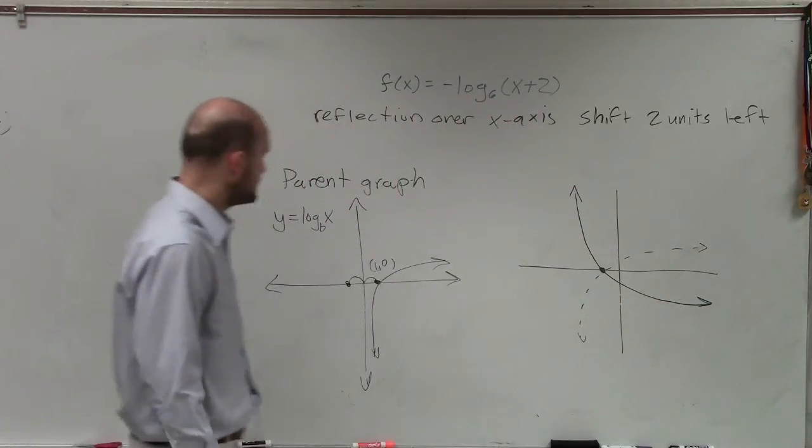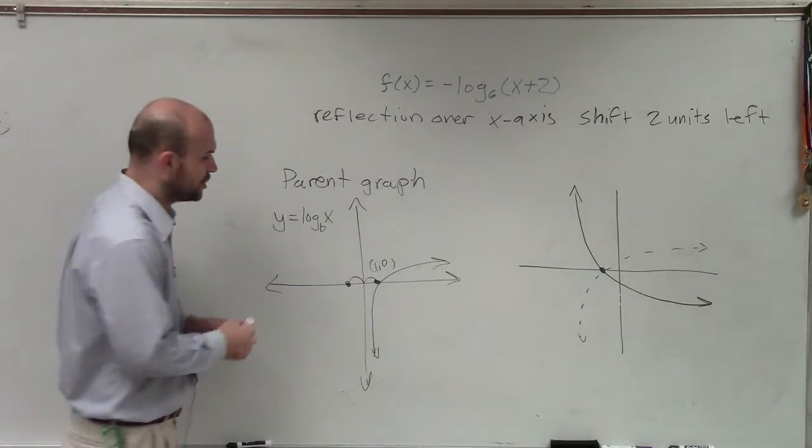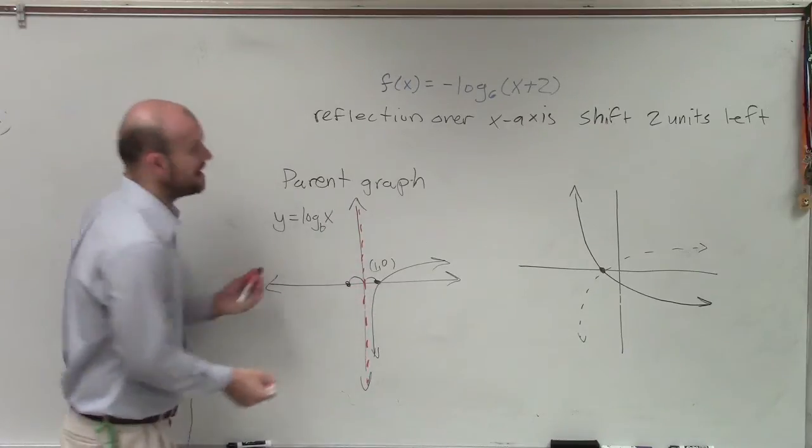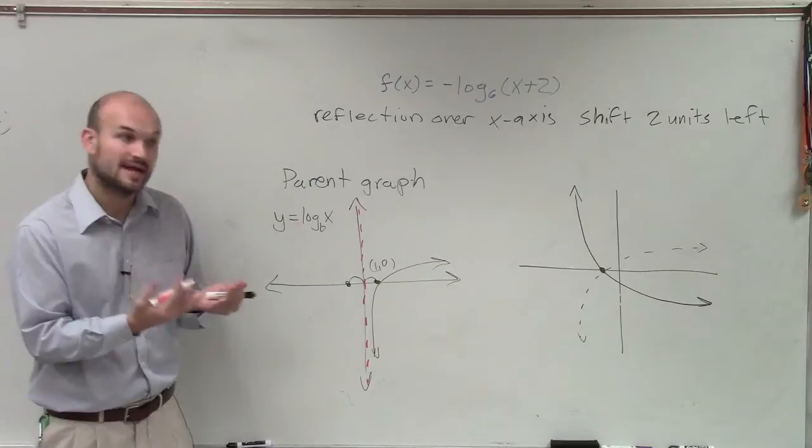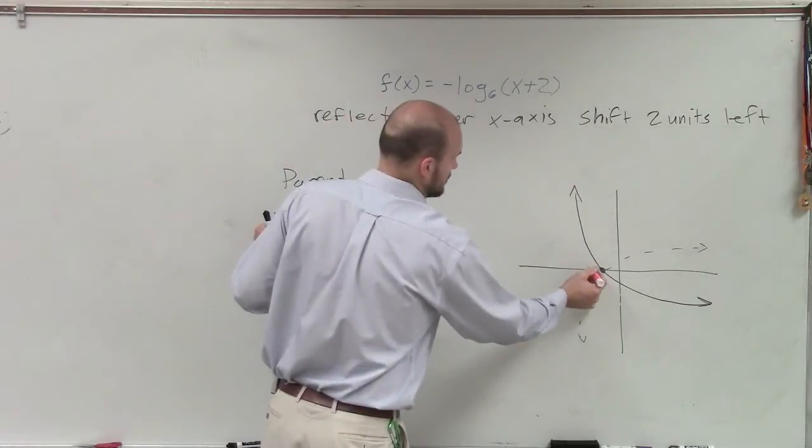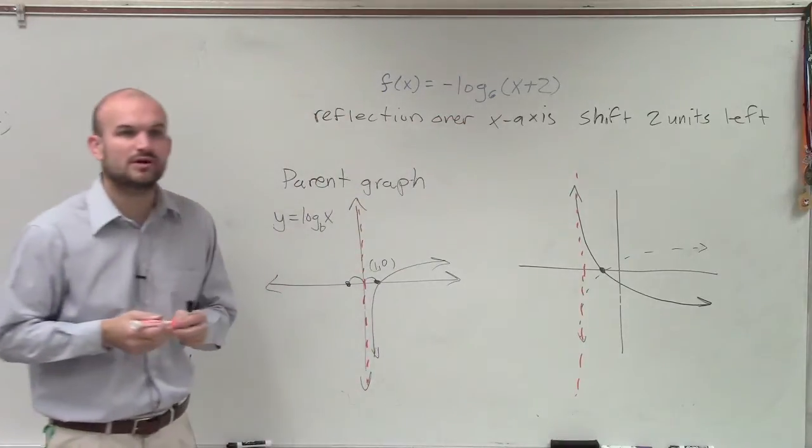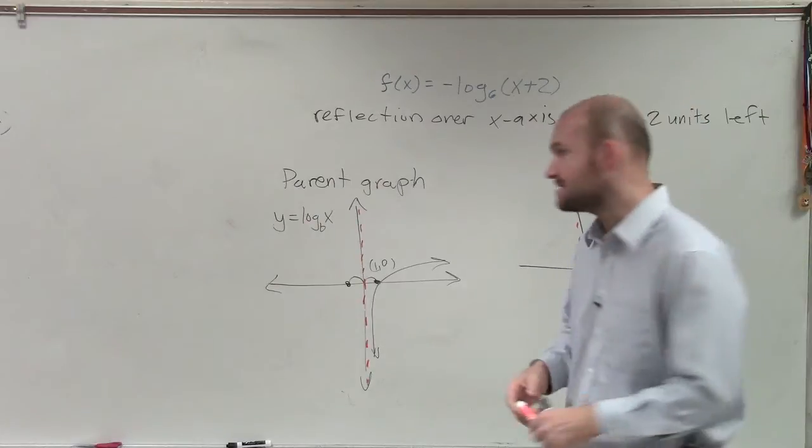All right, now the important thing to understand is where our asymptote is. Our asymptote was previously at 0. So if I've shifted the graph over 2 units, where's my new asymptote? Negative 2. So when drawing my graph, if I have an asymptote that's not in my axis or it's changed, I'm going to write in my asymptote.